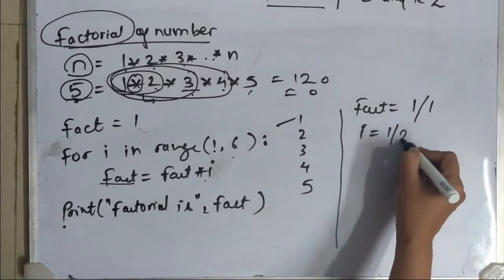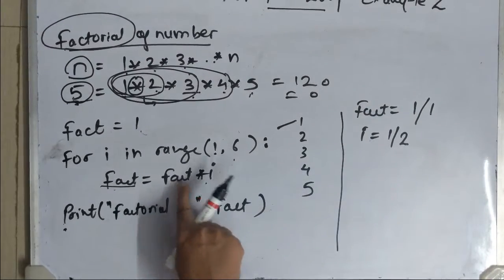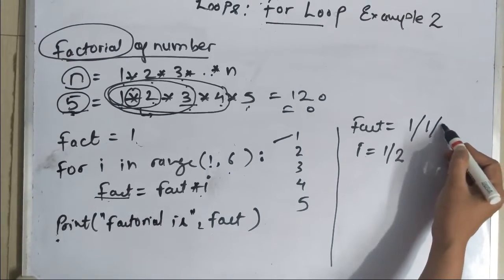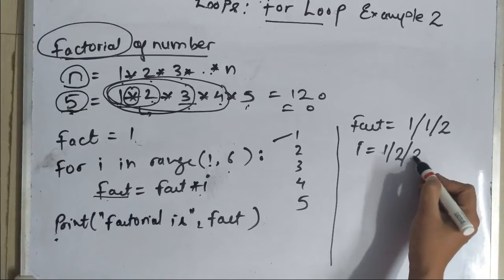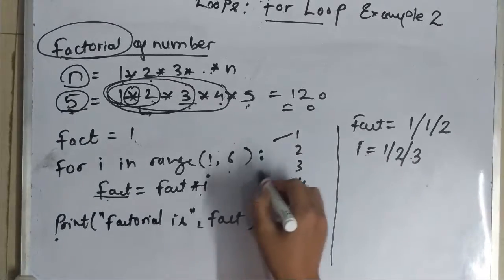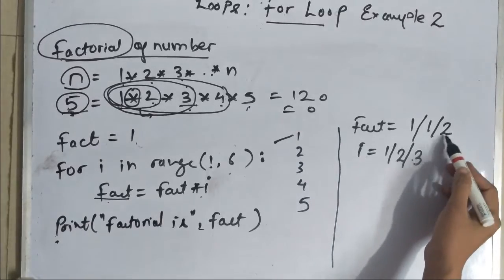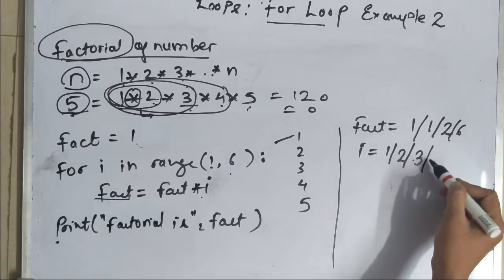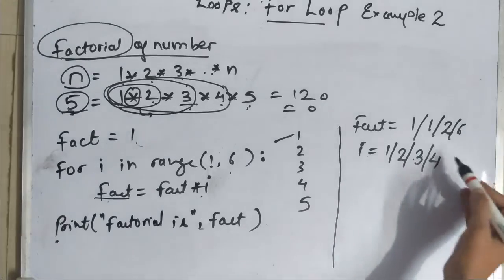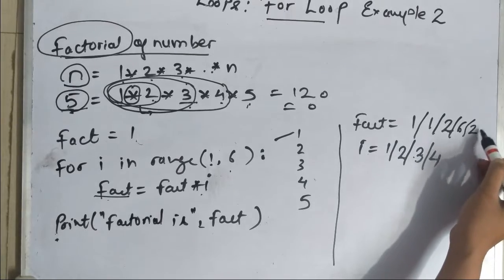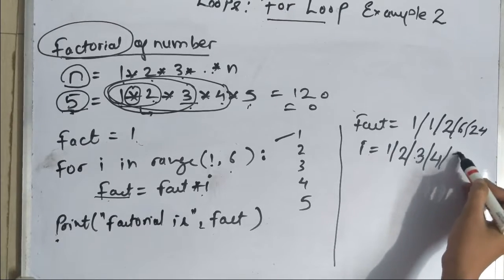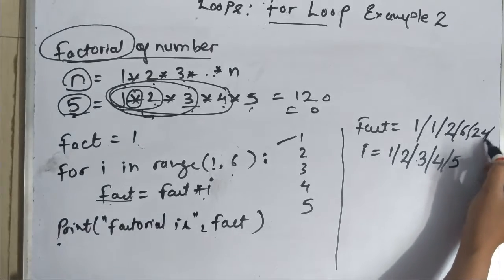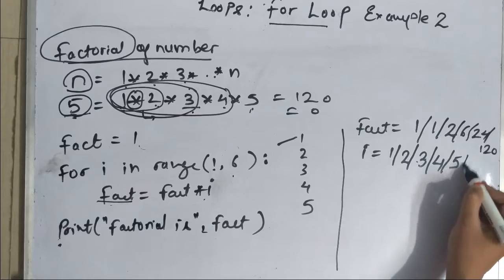After this i will become 2 then it will again do fact into i. The value of fact is 1, the value of i is 2, so 1 into 2, fact will become 2 and the value of i will become 3. Then again it will execute, it will multiply fact into i, 2 into 3 that is 6 and it will increase the value of i to 4. Then again it will repeat 4 into 6 is 24 and the value of i will become 5.